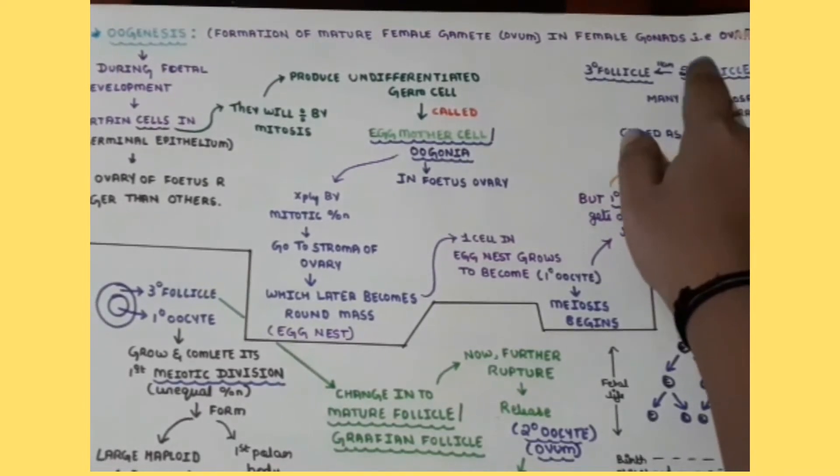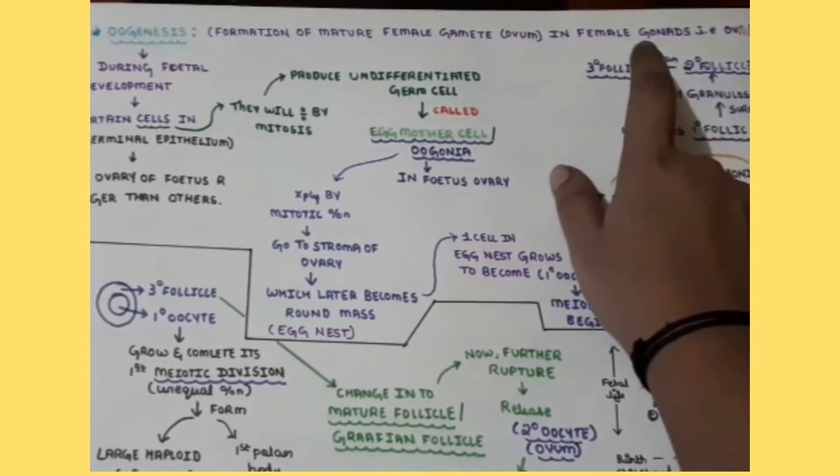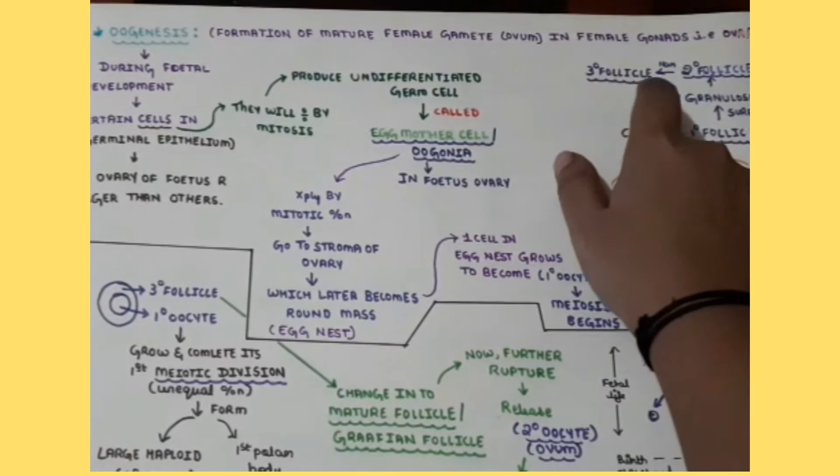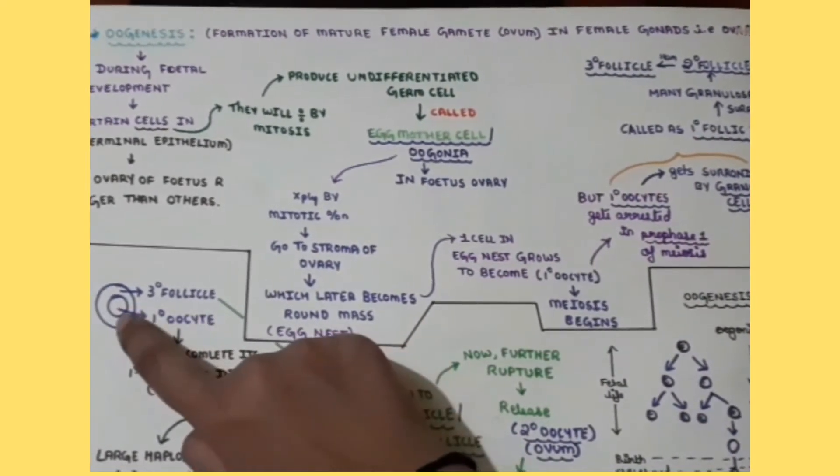The secondary follicle again will be surrounded by the granulosa cells in order to form the tertiary follicle. So what happens after this tertiary follicle formation, here inside the tertiary follicle, now primary oocyte is present.